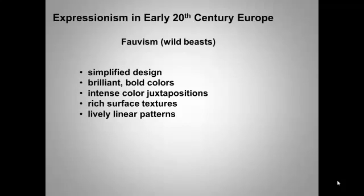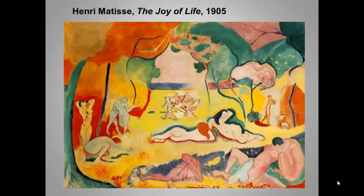Fauvism was a very brief but influential movement of French artists who actually rejected the fin de siècle despair and symbolist literary pretensions. They tried to return to what they saw as Impressionism's joyful embrace of nature while retaining post-Impressionism's expressive use of color. And in fact, this painting is entitled The Joy of Life, by the founder and leader of the Fauves, Henri Matisse.